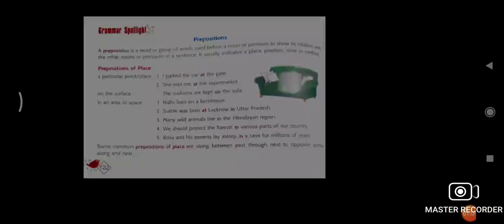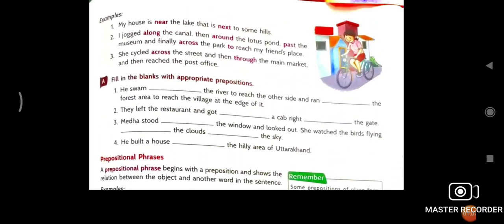Next page. So here, my house is near the lake that is next to some hills. And that is also used, some prepositions of places are like along, between, past, next, opposite, across, along, and near. Here, check that is highlighted.